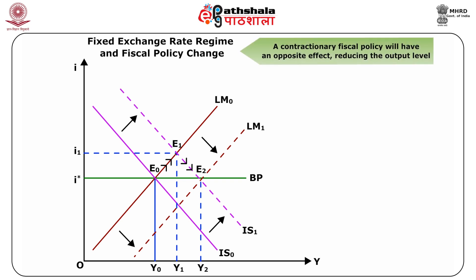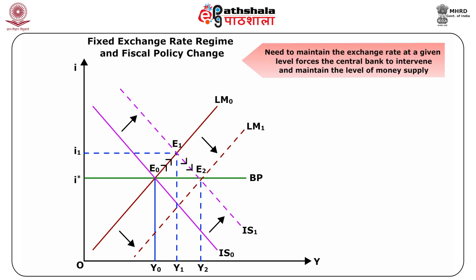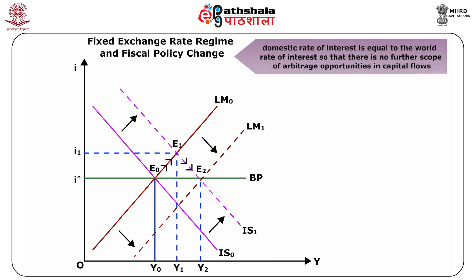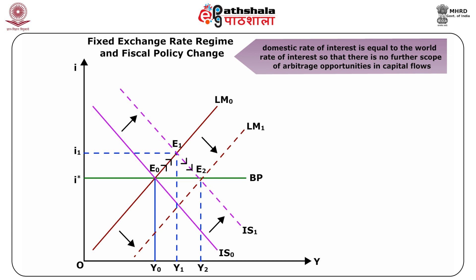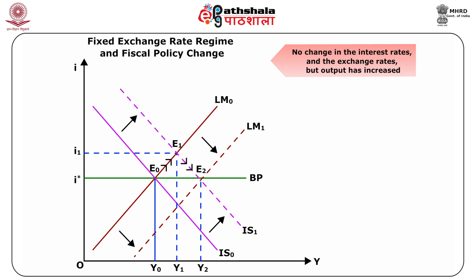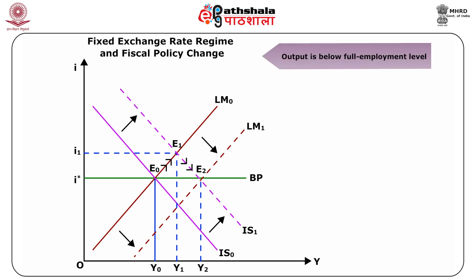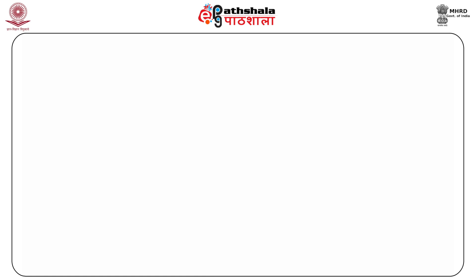A contractionary fiscal policy will have an opposite effect, reducing the output level. Here again, money supply is endogenous. The need to maintain the exchange rate at a given level forces the central bank to intervene and maintain the level of money supply such that the domestic interest rate equals the world interest rate, so there is no further scope for arbitrage in capital flows. Note that this model is for the short run, so both Y0 and the increased output level Y2 are below the full employment level.